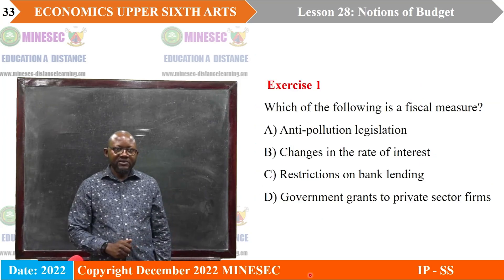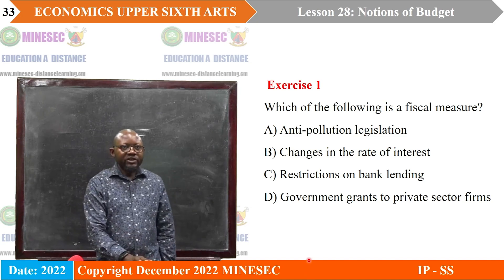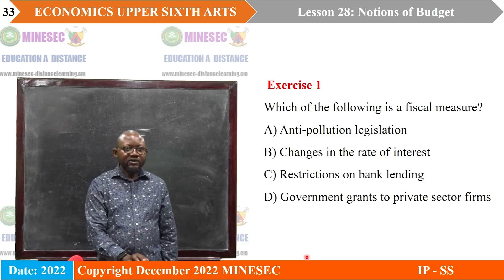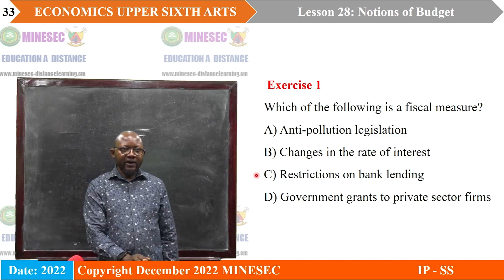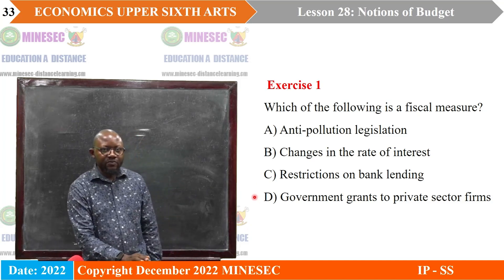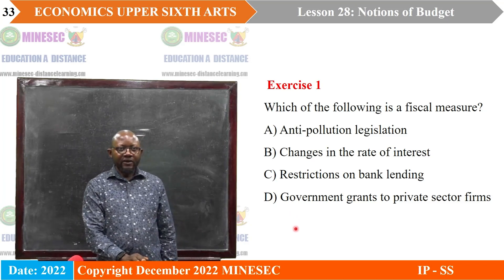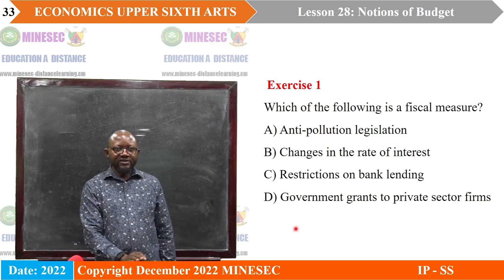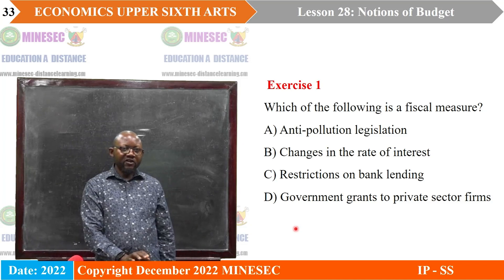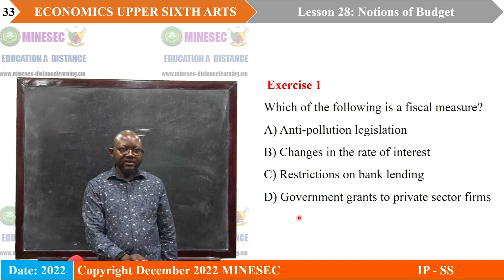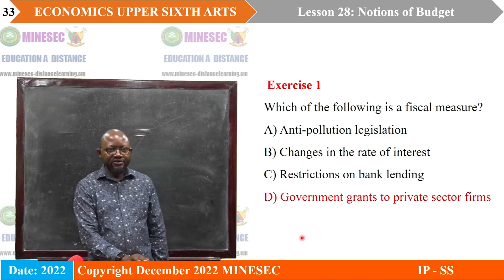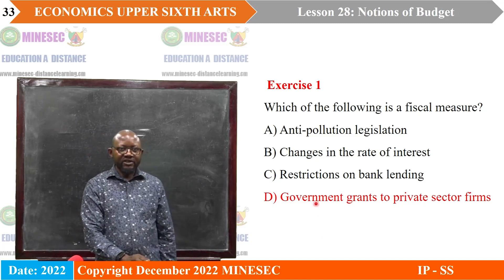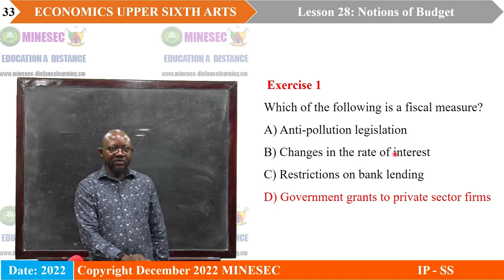Now let's look at some exercises. First: which of the following is a fiscal measure? A. Anti-pollution legislation. B. Changes in the rates of interest. C. Restrictions on bank lending. D. Government grants to private sector firms. Remember, fiscal policy talks of G and T — manipulating government expenditure and income. So the best answer here is D, government grants to private sector firms, as this has to do with government expenditure. Restrictions on bank lending and rate of interest relate to monetary policy.